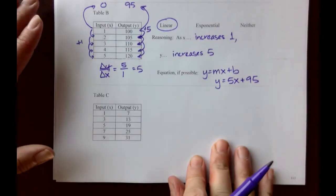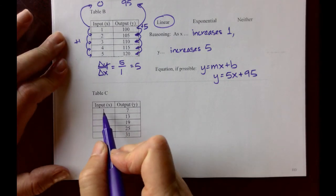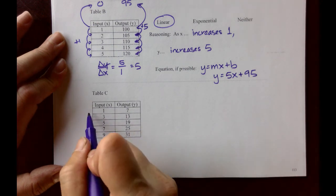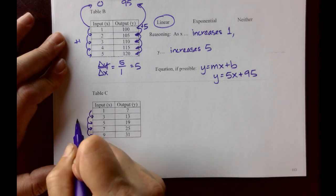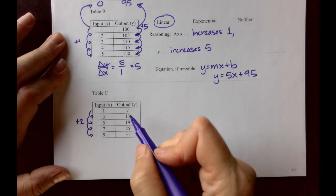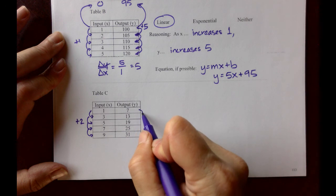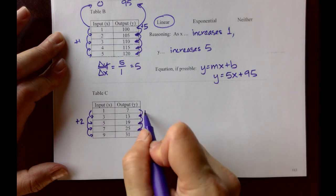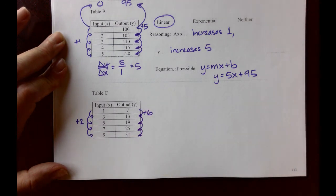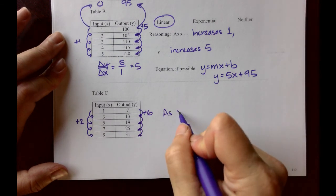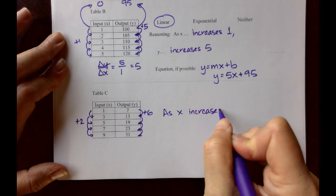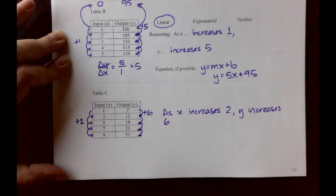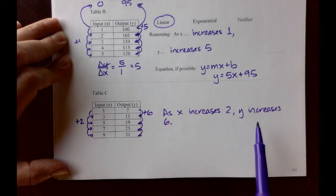Table C. The x's in table C, 1, 3, 5, 7, 9, and those are each increasing by 2. The outputs y, 7, to 13, to 19, to 25, to 31, those are all increasing by 6. For your explanation, as x increases 2, y increases 6, that means that we have a linear relationship.